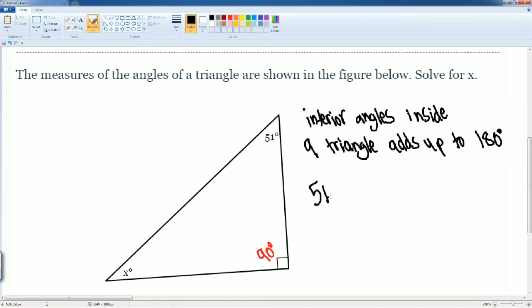So the equation would be: 51 plus 90 degrees plus X equals 180. Then we can combine some like terms, which is the 51 plus 90, that gets us 141. Bring everything else down, so plus X equals 180.